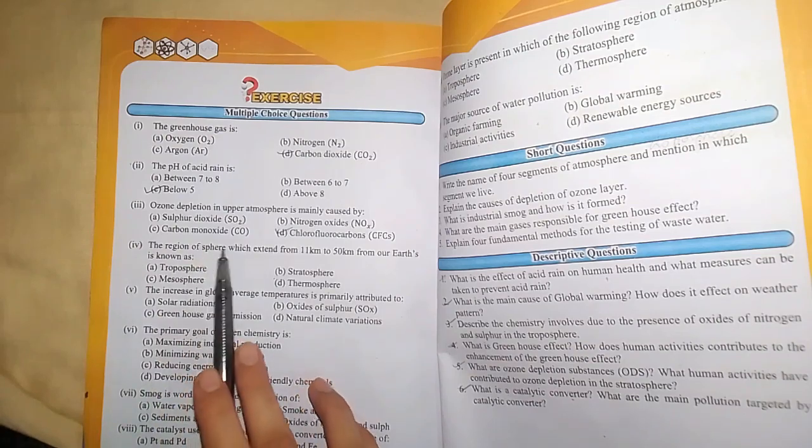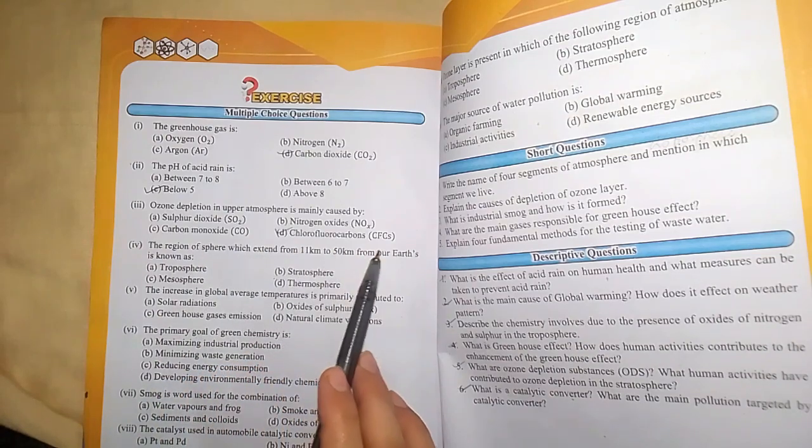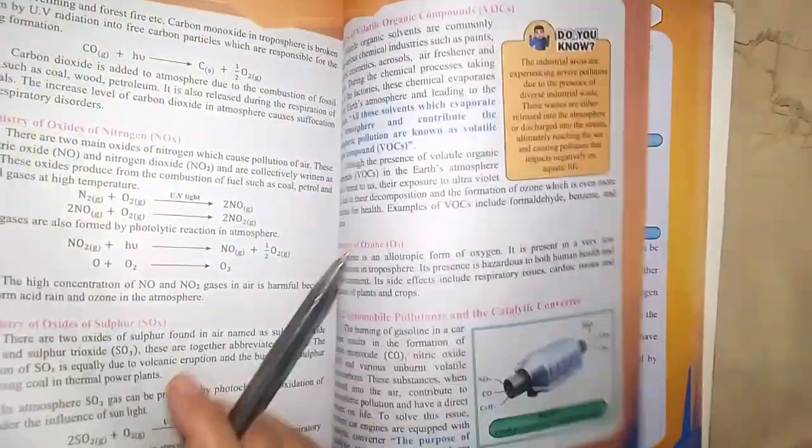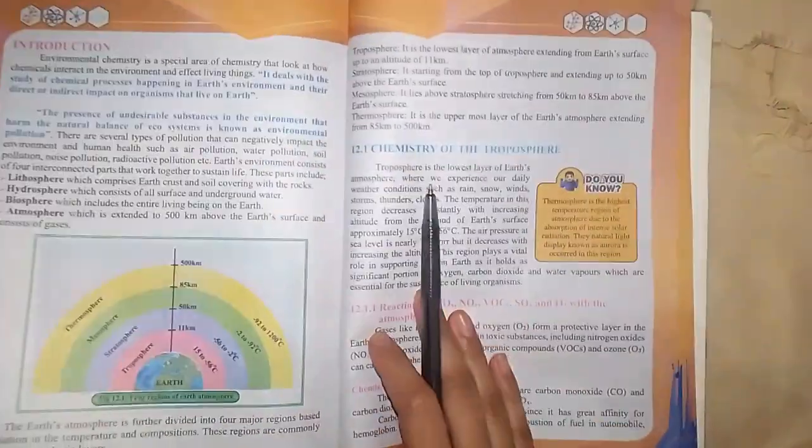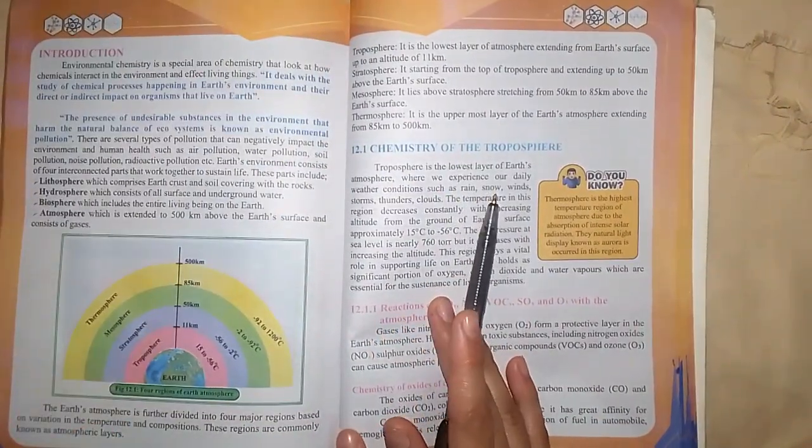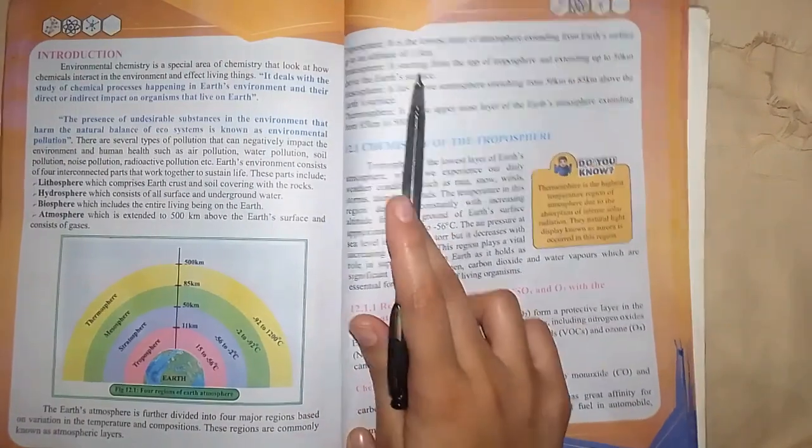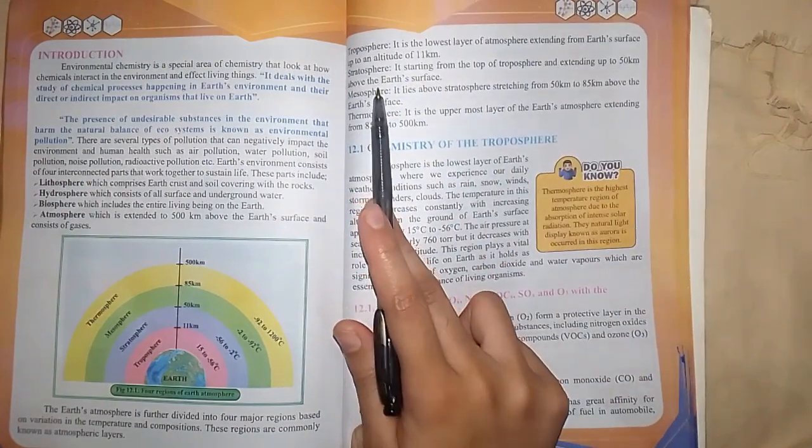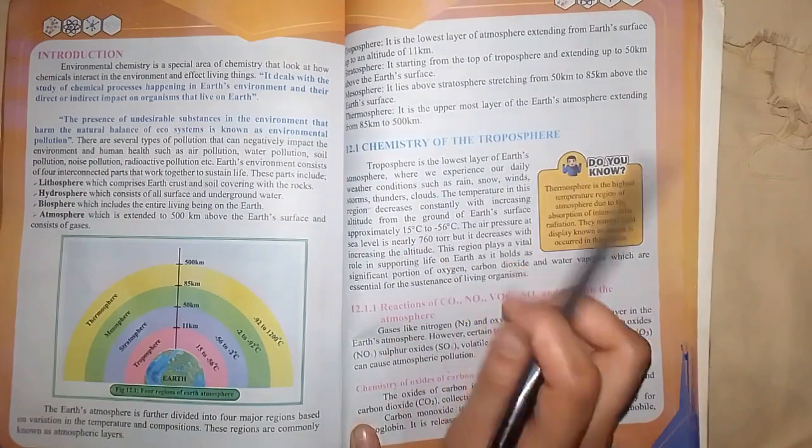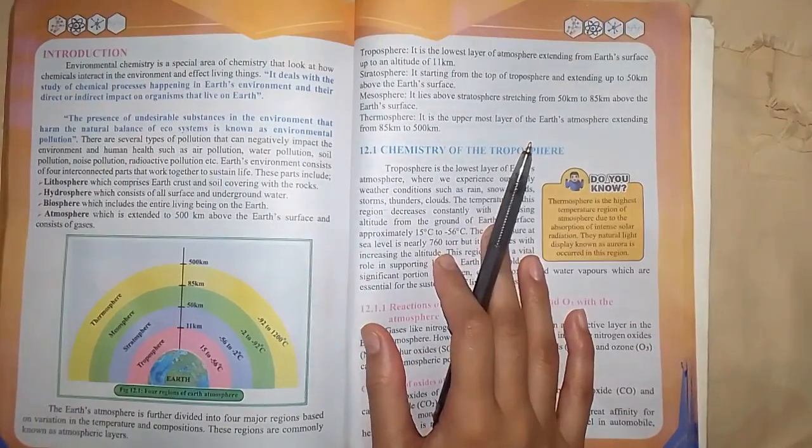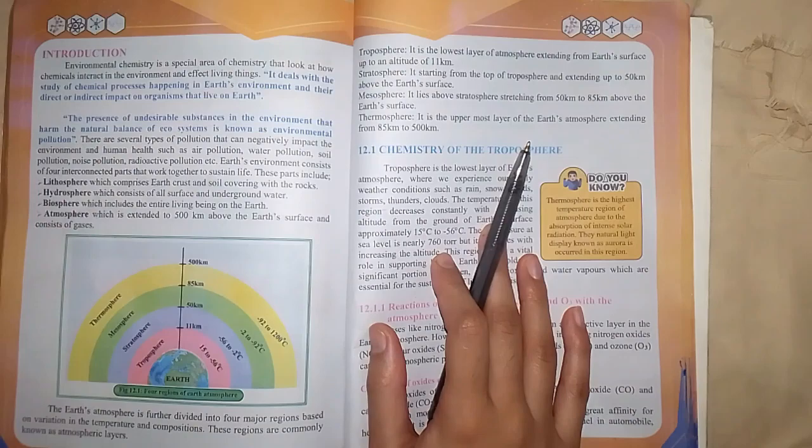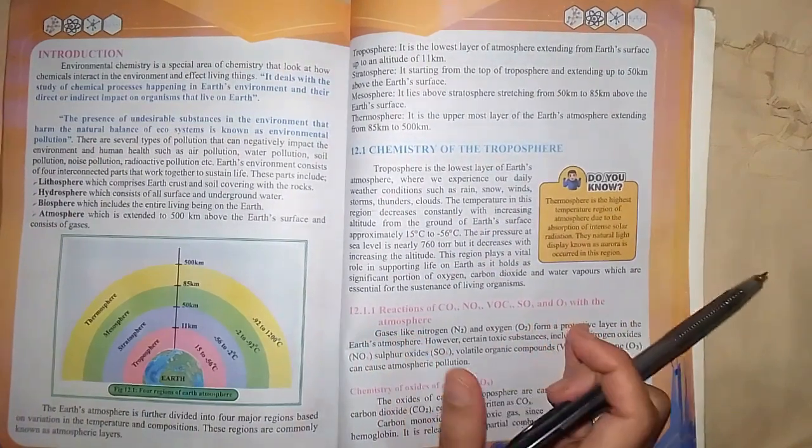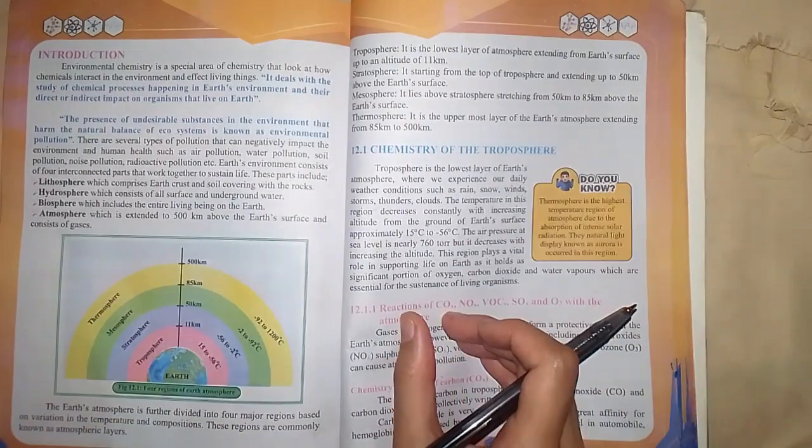MCQ number 4: The region of atmosphere which extends from 11 km to 50 km from Earth is known as what? You have to memorize these layers. Troposphere is the lowest layer extending to 11 km altitude. Stratosphere extends from 11 to 50 km. Mesosphere is 50 to 85 km, and thermosphere is 85 to 500 km. Here it's written 11 to 50 km, so the correct option is stratosphere.